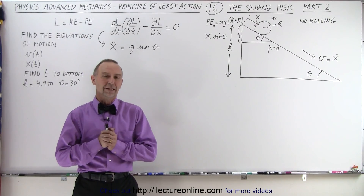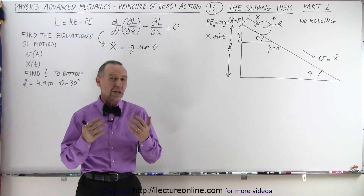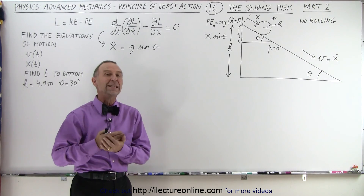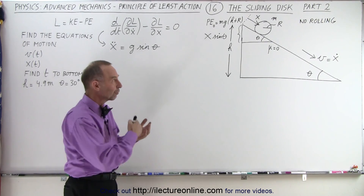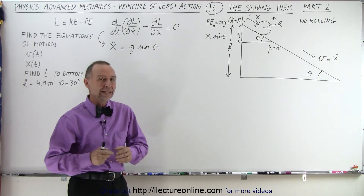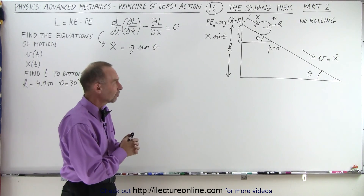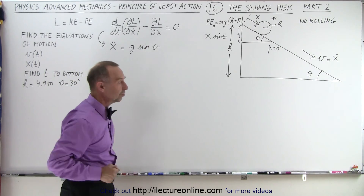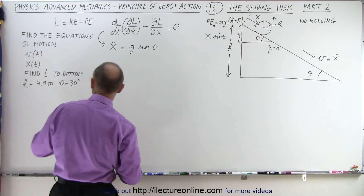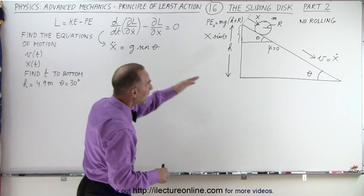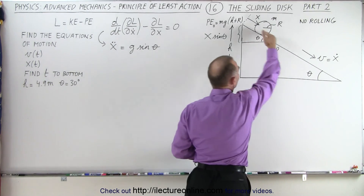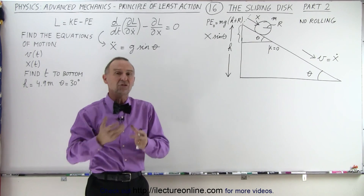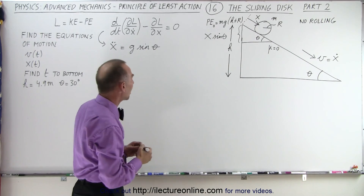Welcome to our lecture online. Now that we've found the differential equation using the Lagrangian, we're now going to find the equations of motion for velocity as a function of time and position as a function of time along the incline and also along the vertical distance. Then we're going to find the time it takes to get to the bottom, both along this path and along this path, and those two times better be the same to check if we got the equations correct.